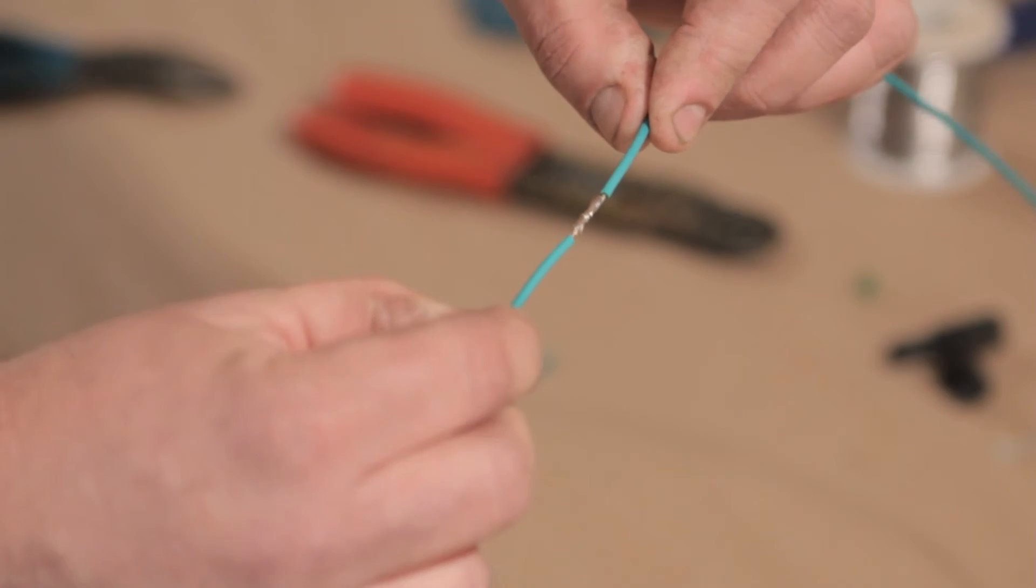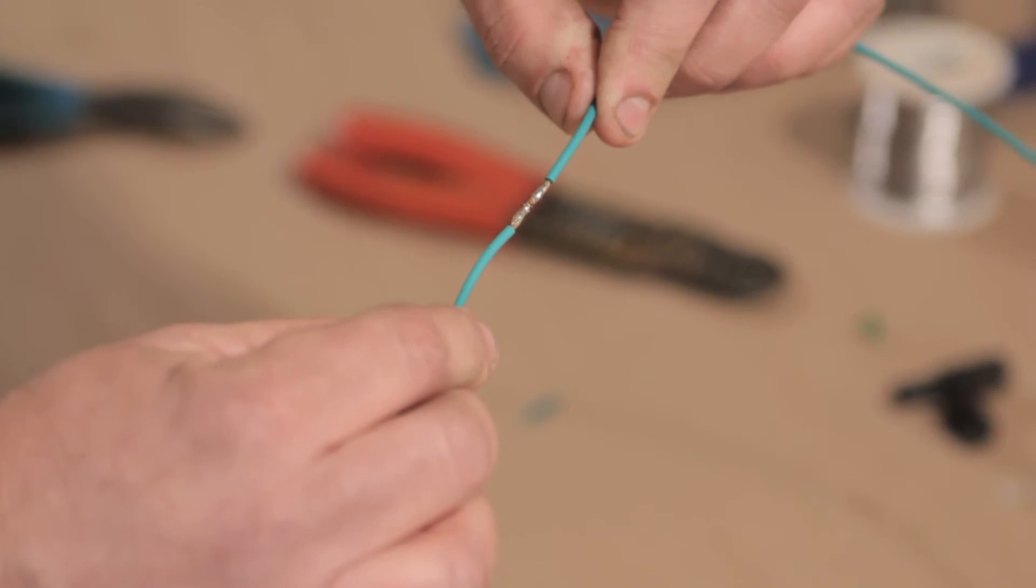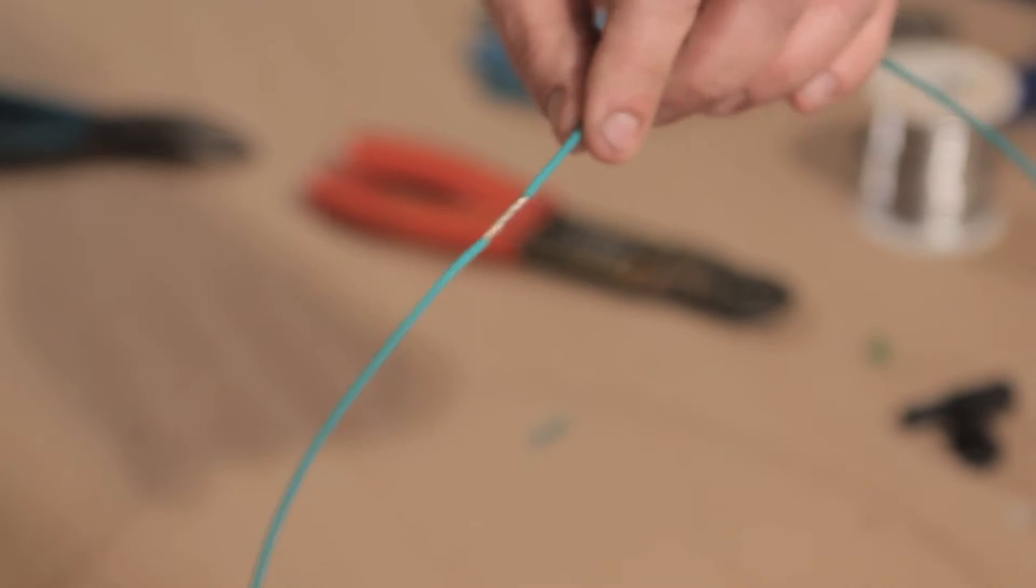And then you want to inspect your joint and make sure that there aren't any sharp points. Sometimes when you pull the soldering gun away from the joint, you'll create a sharp point out of the solder, which will work its way through the heat shrink. So just inspect it, make sure it's good.